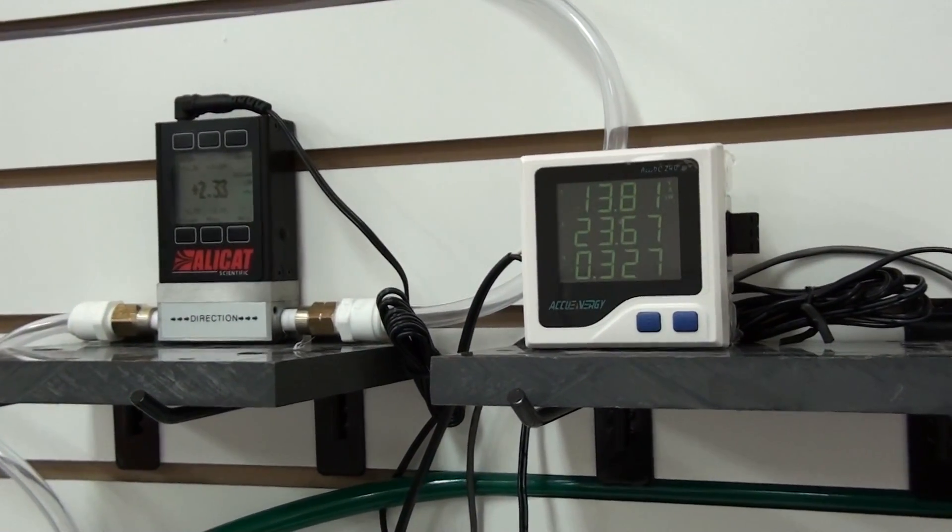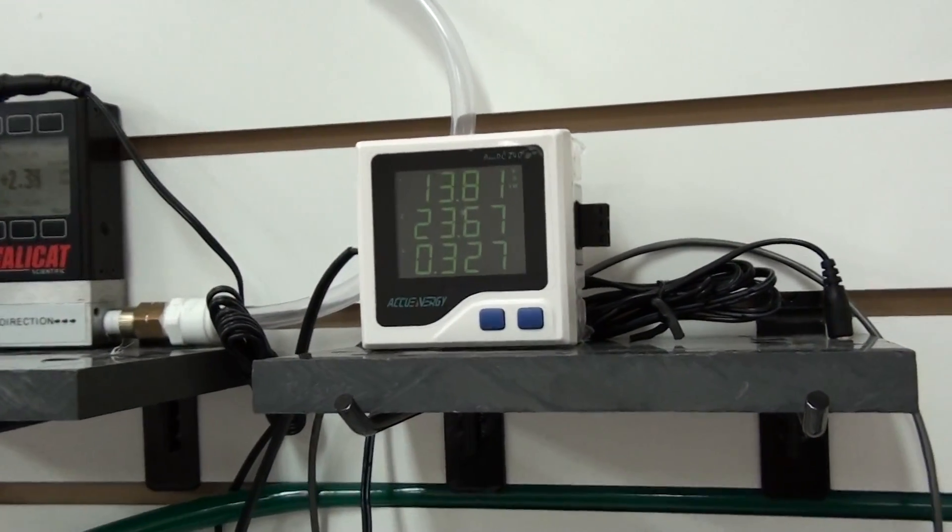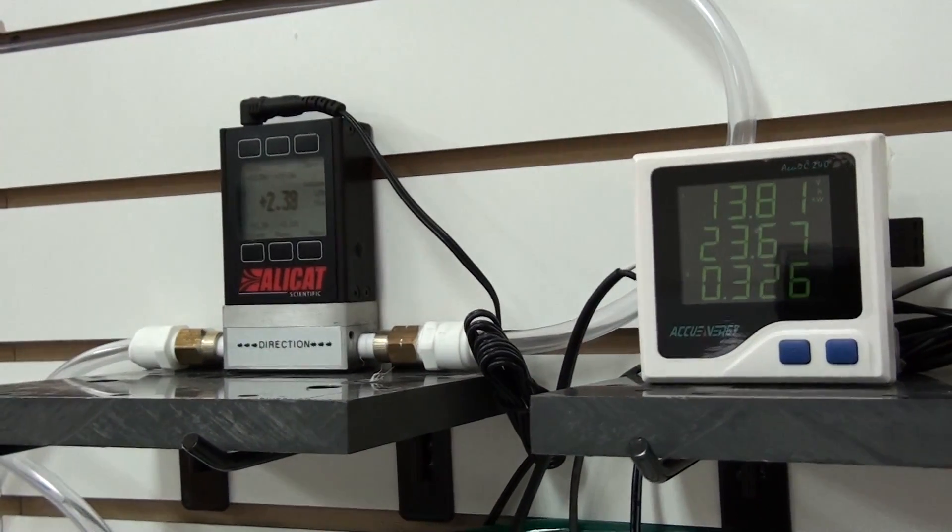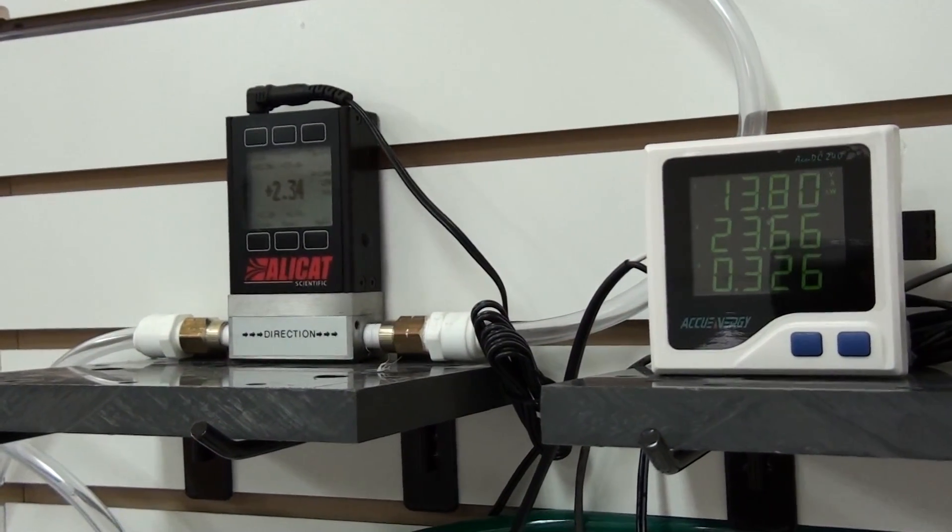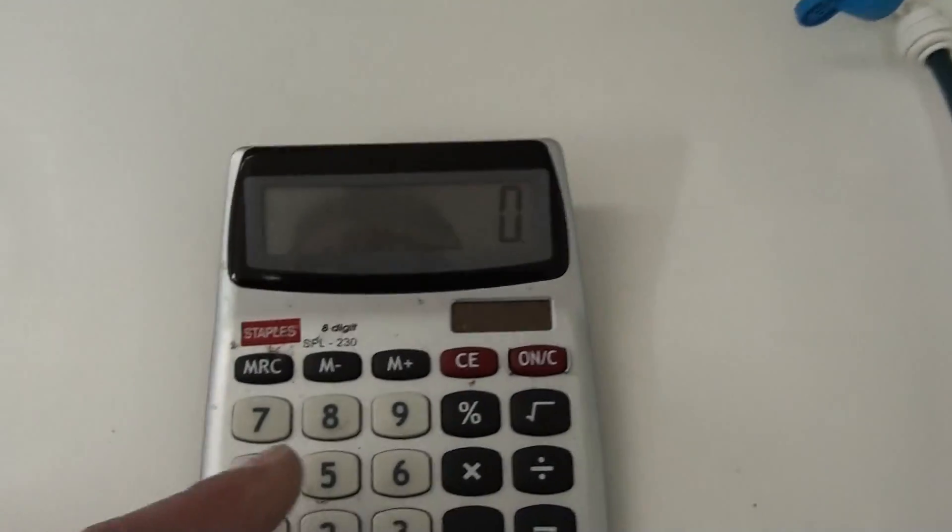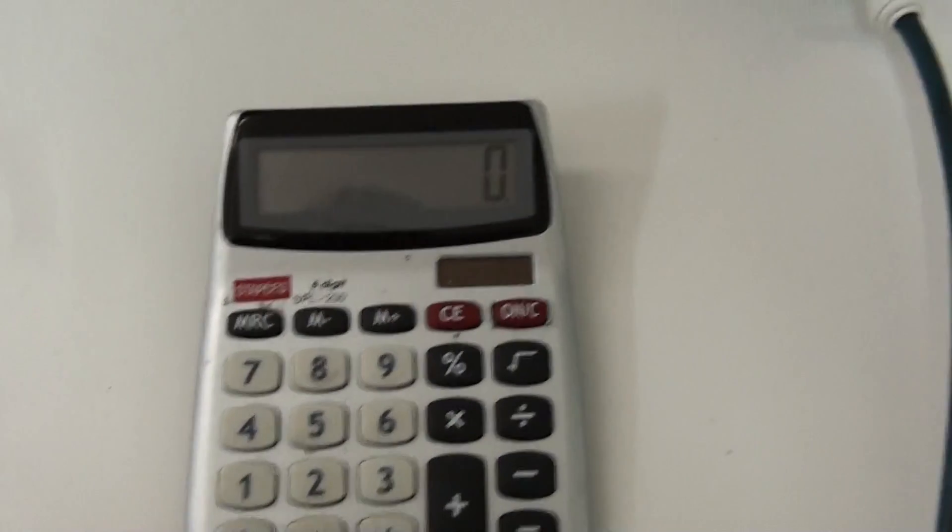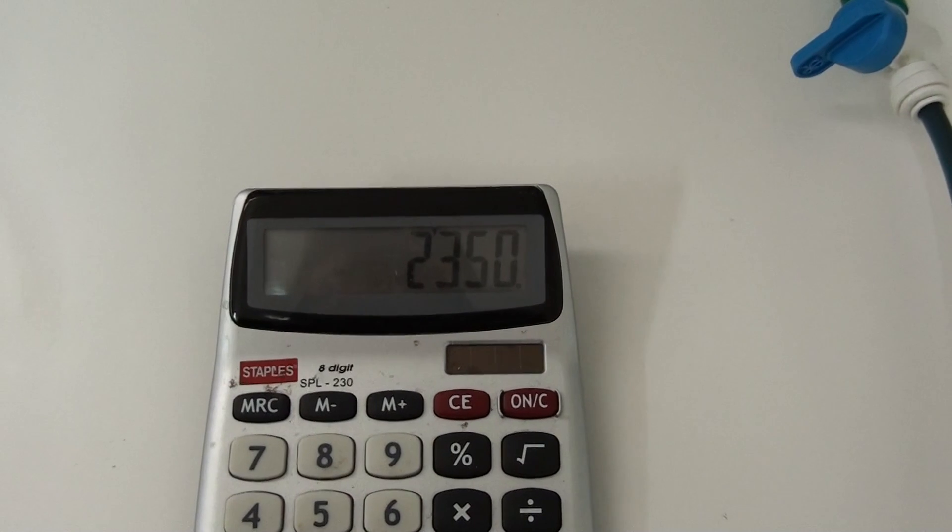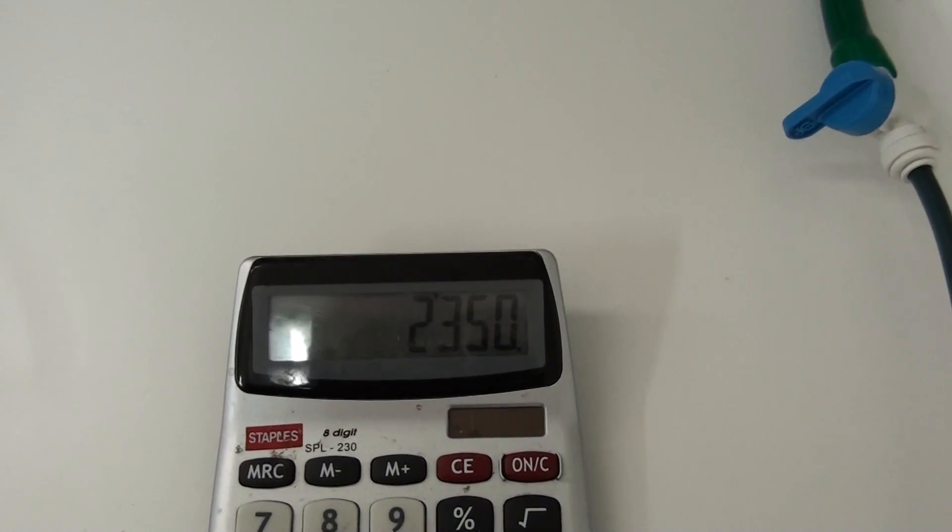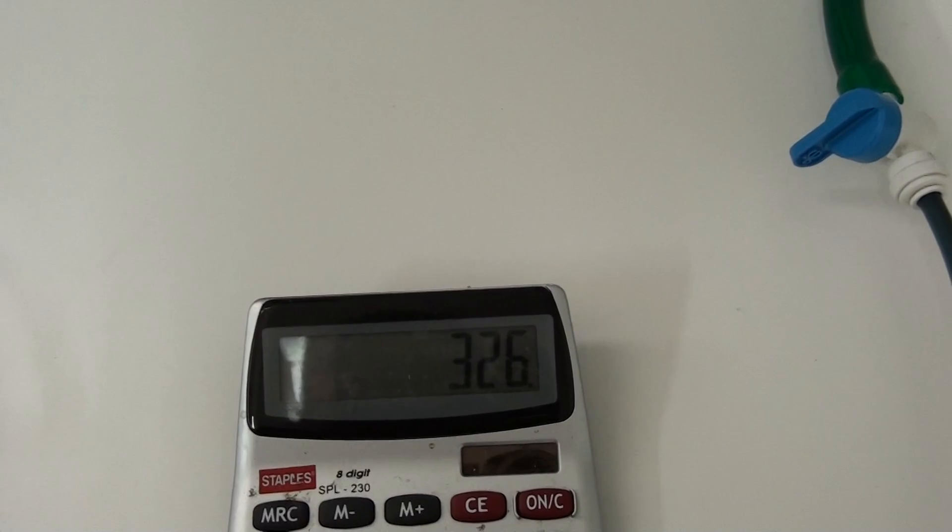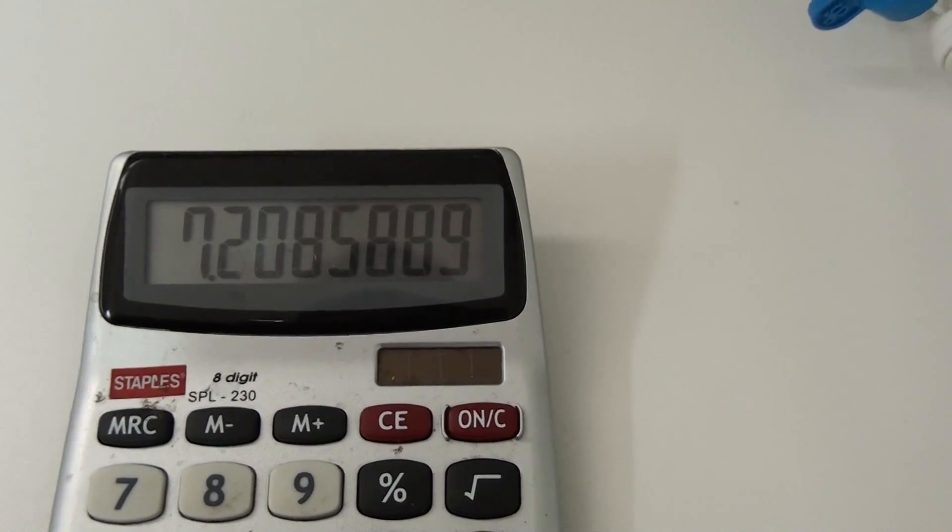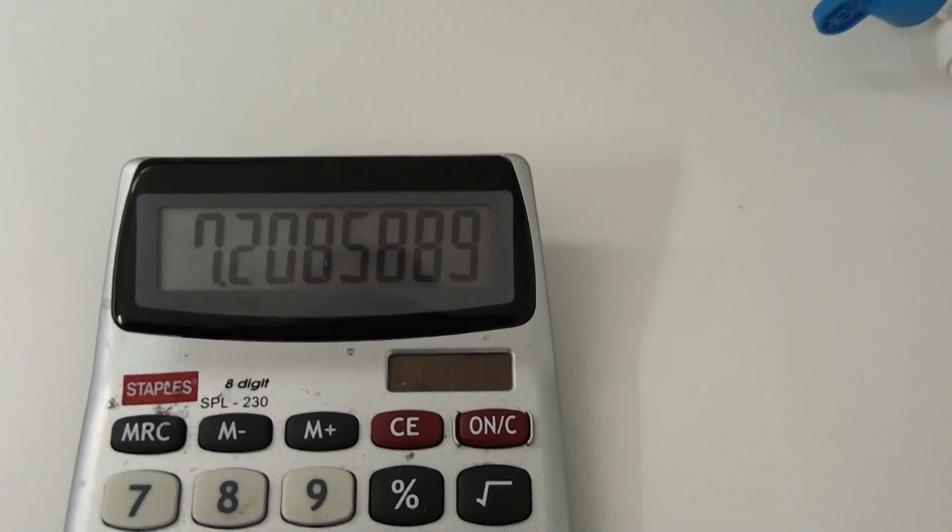So let's take a look at the efficiency of the cell. I'm running at 327 watts and 2.35 liters per minute. So 2350 divided by my watt 326. Right now the cell is running a little over 7 mmW. That's milliliters per minute per watt.